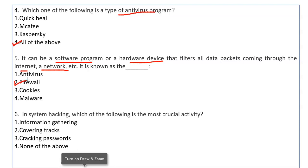In system hacking, which of the following is the most crucial activity? When a system is hacked, the most important activity is cracking passwords — whatever they have to crack to steal information.